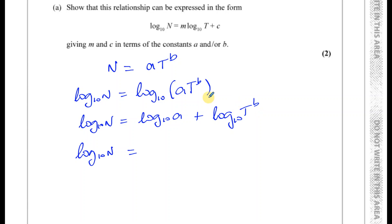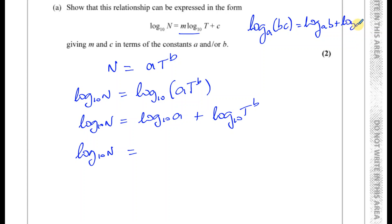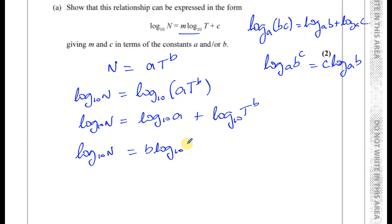Now I'm going to write the t term first to match the required form, then apply the power law. For recap: log base a of b times c equals log base a of b plus log base a of c — that's the multiplication law used earlier. The power law states log base a of b to the power of c equals c times log base a of b. Applying that gives: b times log base 10 of t plus log base 10 of a.